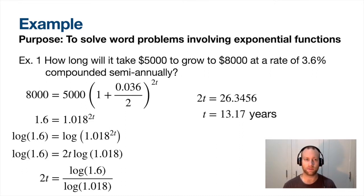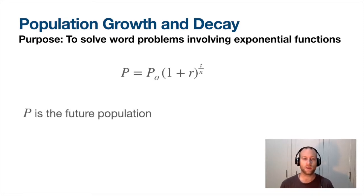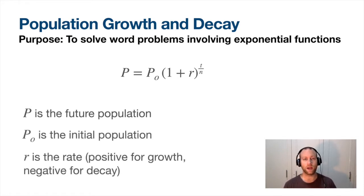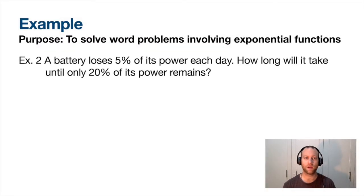Population growth and decay - you've seen this, this was in chapter 7, same equation. Here it is as a reminder: future population, initial population, rate being positive if you grow, negative if you decay, and n is the increment of rate - how long does it take for that rate to occur, is it every year, every two years, every week? T is time, always time.